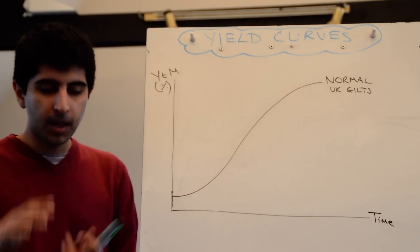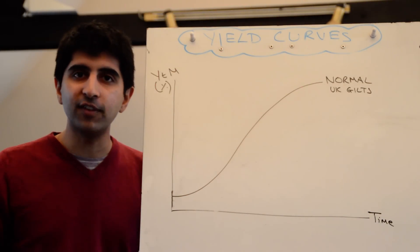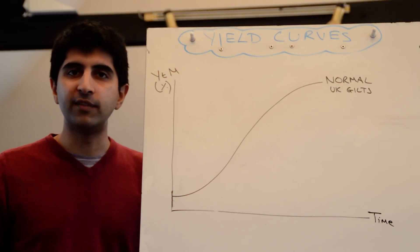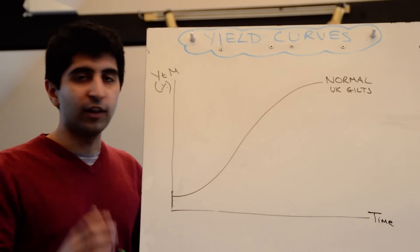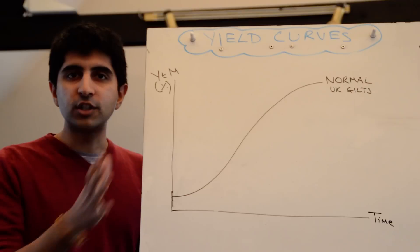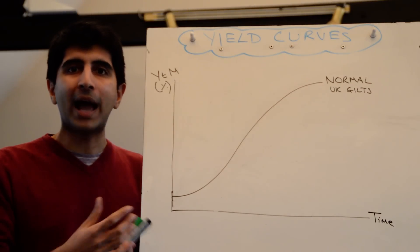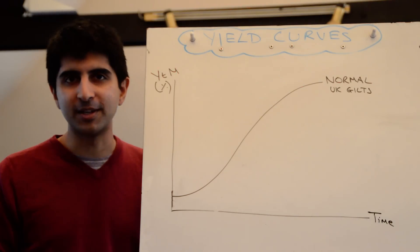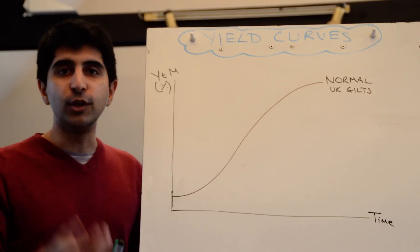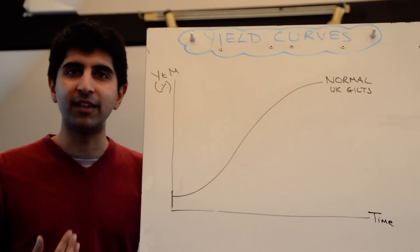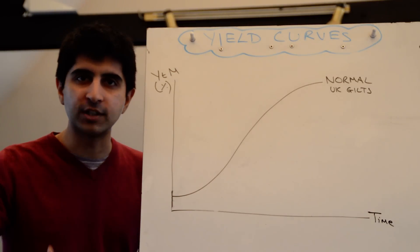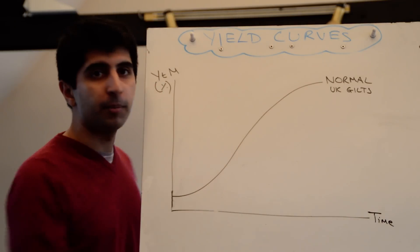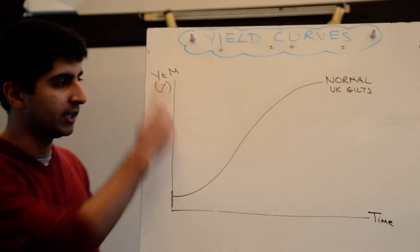A second reason is to hedge against inflation. Inflation erodes the value of an investment. So the longer you're tying your money up, the more you are at risk of inflation eroding the value of your investment. So again, you will demand a higher yield to protect against investment in the long term. Those are two reasons why we tend to see an upward sloping relationship between yields and time.